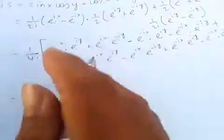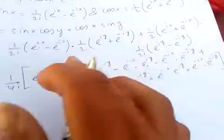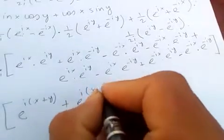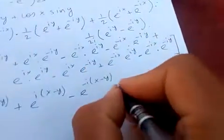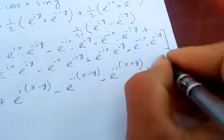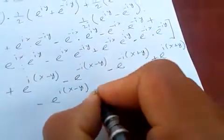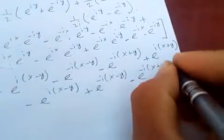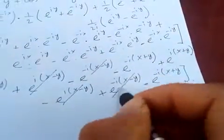By the law of indices, same base with multiplication means powers are added. So we get: e to the i(x+y), plus e to the i(x-y), minus e to the minus i(x+y), minus e to the i(x-y), plus e to the i(x+y), minus e to the i(x-y), plus e to the minus i(x-y), minus e to the minus i(x+y).